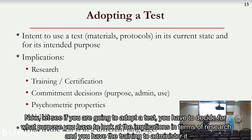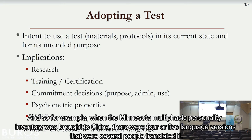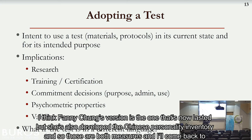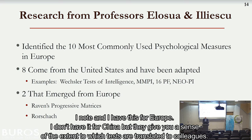If you're going to adopt a test, you have to decide for what purpose, look at the implications for research, determine if you have the training to administer it, and assess the psychometric properties including validity. Check whether it's already available in another language. For example, when the Minnesota Multiphasic Personality Inventory was brought to China, there were four or five language versions. Fanny Cheung's version is the one that has lasted, but she's also developed the Chinese Personality Inventory.